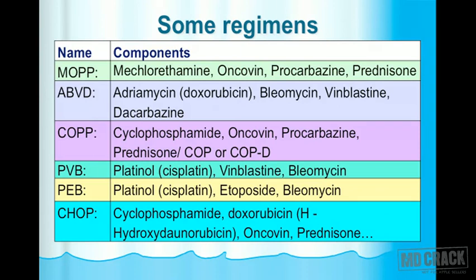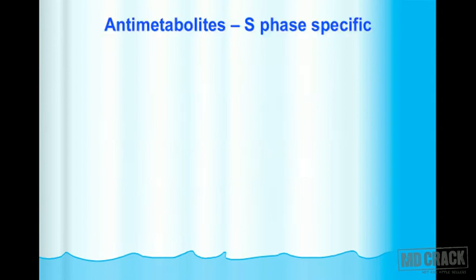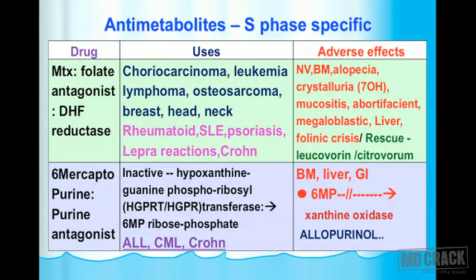We now move to a new group: anti-metabolites. Anti-metabolites act on the S phase (DNA synthesis). They include folate antagonists — methotrexate; purine antagonists — 6-MP (6-mercaptopurine) and 6-TG (thioguanine); and pyrimidine antagonists — 5-FU (5-fluorouracil) and cytarabine.